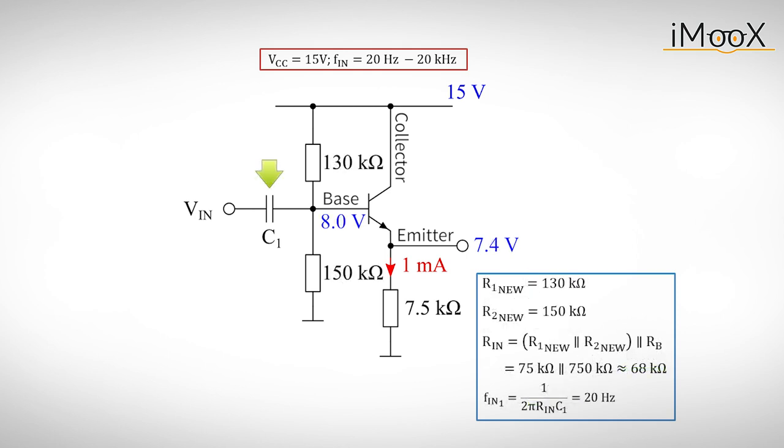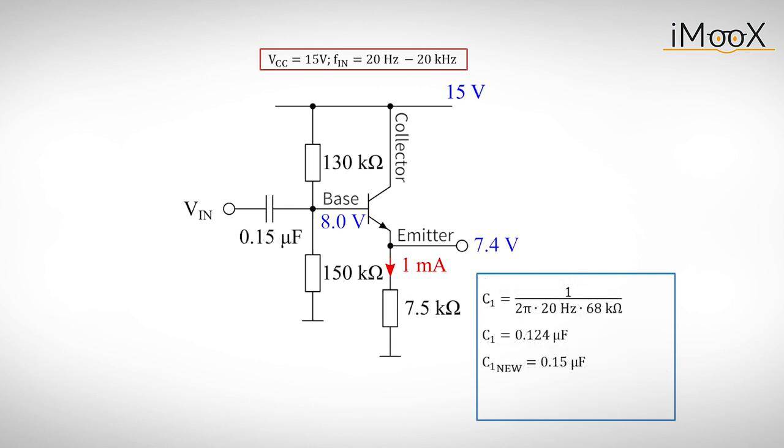As a last step, we choose C1 to form a high-pass filter for every AC signal with frequencies above 20Hz. The input impedance we now have to deal with is the impedance looking from the input into the voltage divider. It is about 75K in parallel to the input impedance of the follower, which is about 750K. This leaves us with a value of 68K to design the high-pass filter with C1. We can now calculate the capacitor for a 3dB cutoff frequency of 20Hz. Again, we want to choose a proper value in the E24 series and finally get a capacitor value of about 0.15uF.